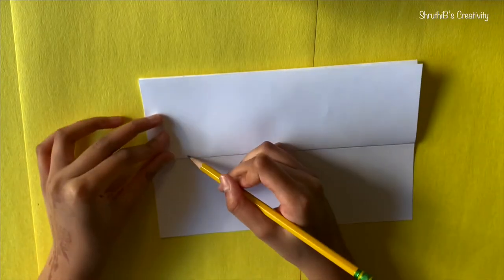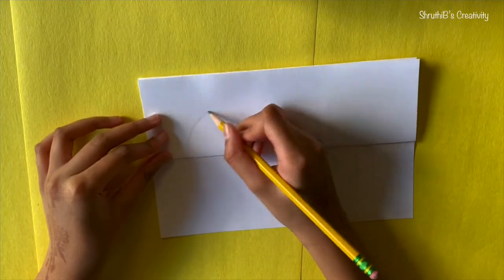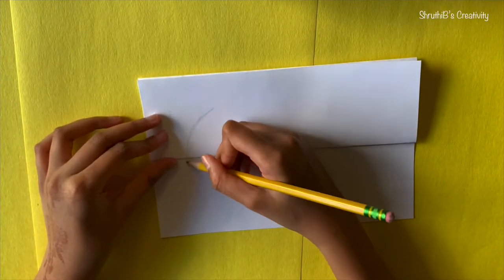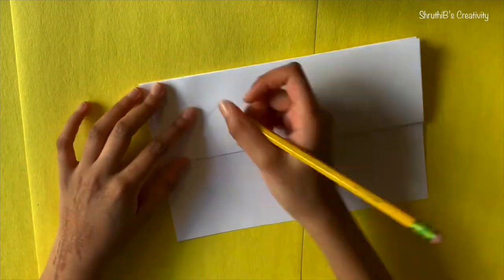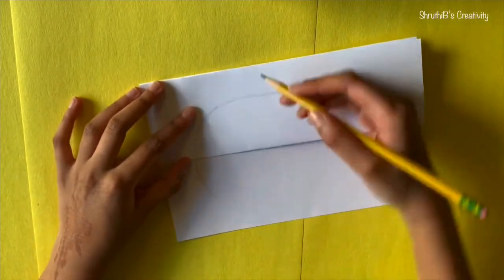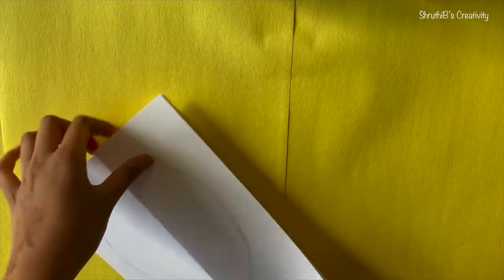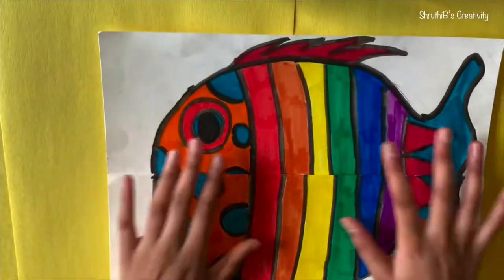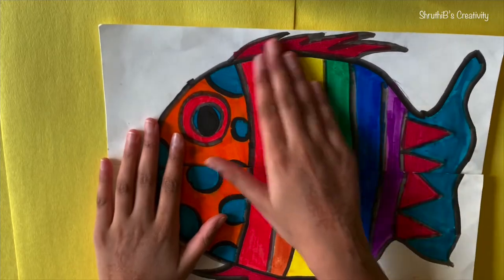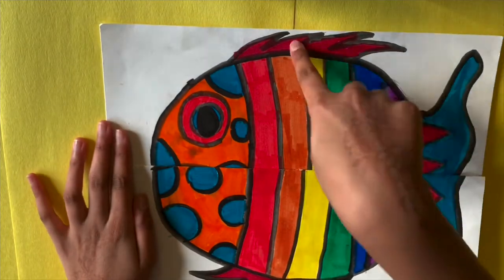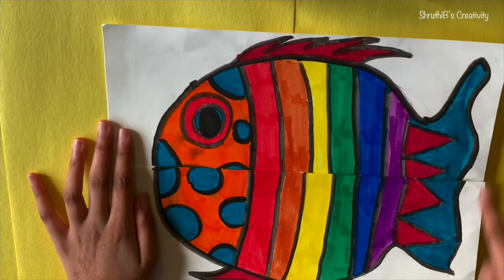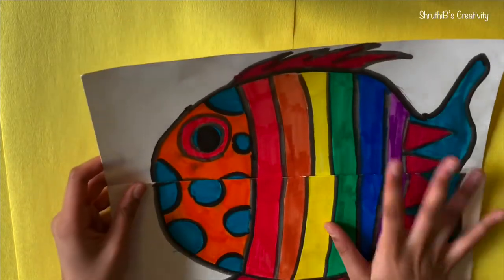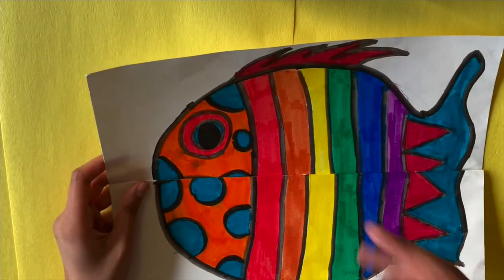Now that we have our paper all folded up, let's start doodling with our pencil. I am just roughly drawing the fish body. Let's take a look back at our original fish. The original fish had an oval shape and I added this to the original fish.